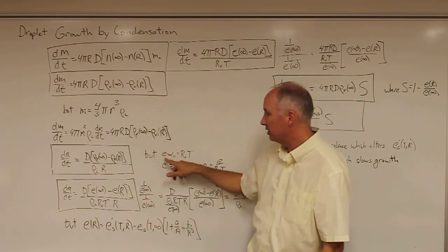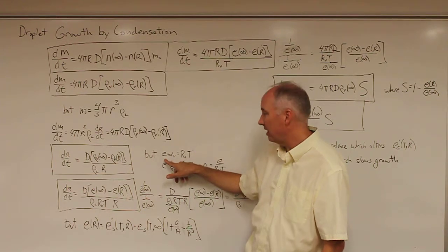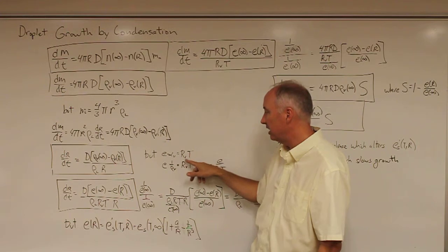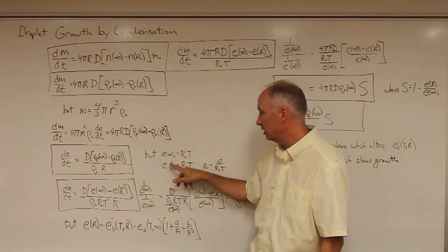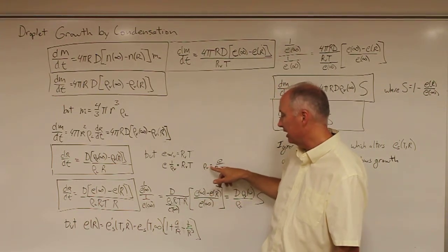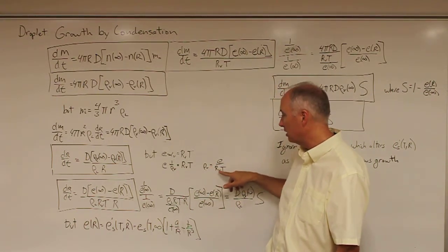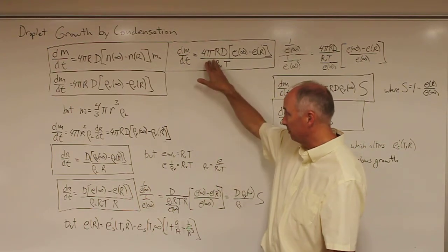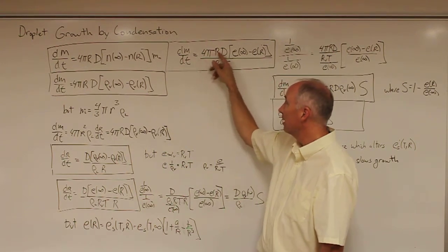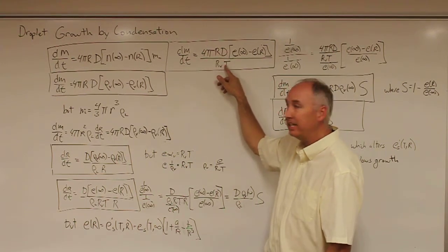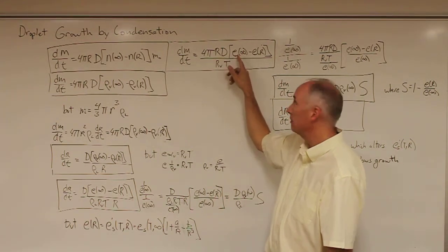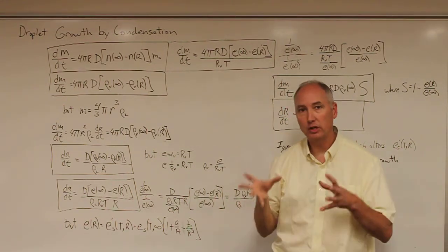Recalling that from the ideal gas law, e·αv = r_v·T, and the specific volume is 1 over the density of the vapor, you can solve for the density of the vapor: it equals the vapor pressure divided by r_v·T. Making that transformation yields a third form of this equation: dm/dt = 4πr·D / (r_v·T) times the vapor pressure far from the droplet minus the vapor pressure at the droplet surface.